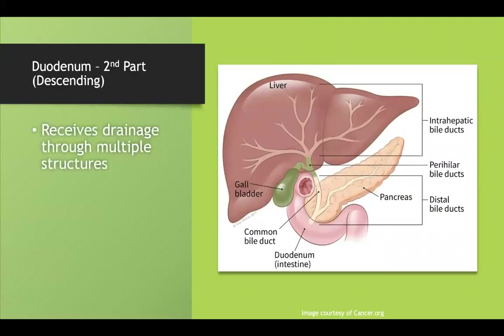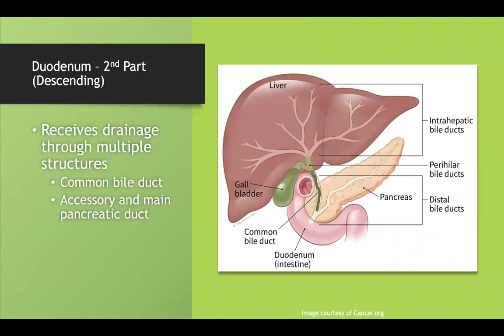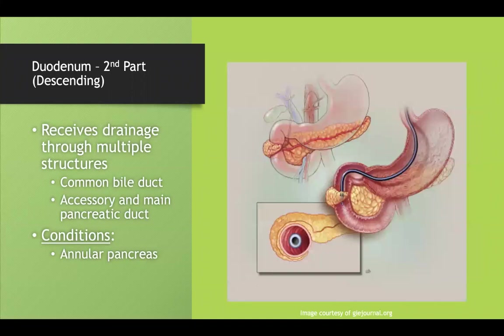The second part of the duodenum receives drainage through the common bile duct and the main and accessory pancreatic ducts. A condition to think about here is annular pancreas, which occurs in the second part and can constrict it, causing obstruction.